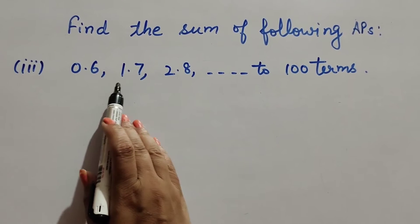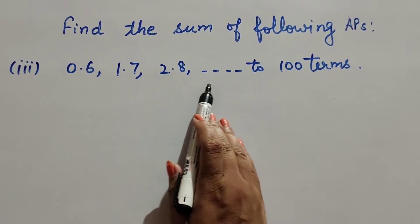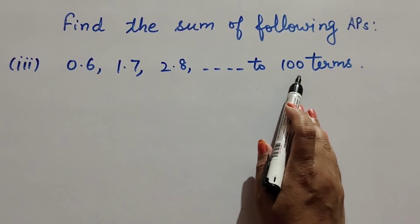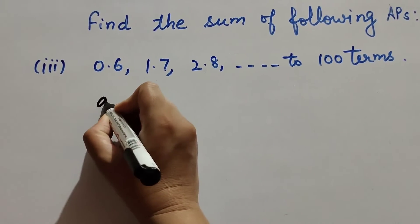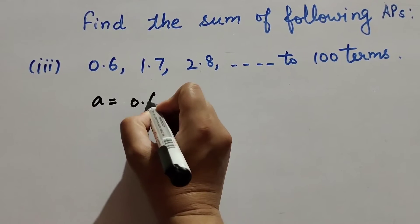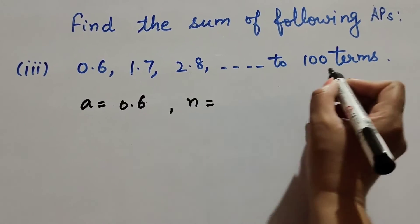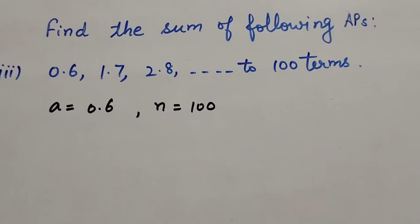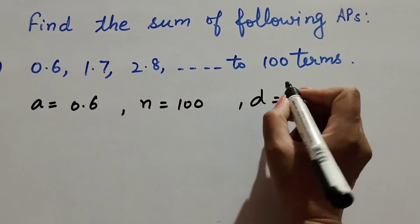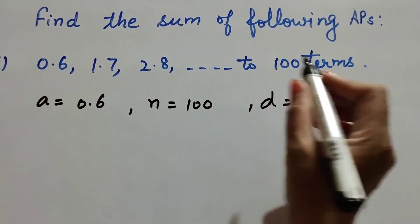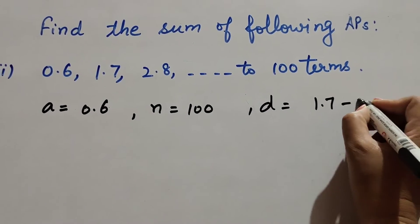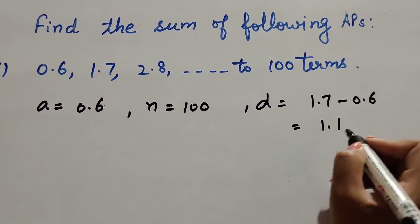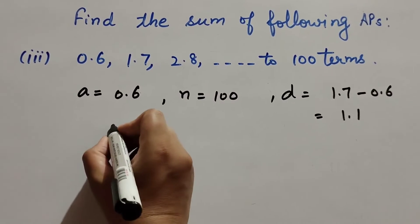In the third part, the AP series is 0.6, 1.7, 2.8, and so on up to 100 terms. We find the sum of 100 terms. First term a = 0.6, n = 100, and common difference d = second term minus first term = 1.7 − 0.6 = 1.1.